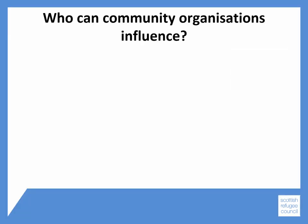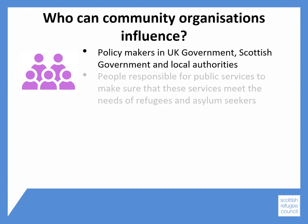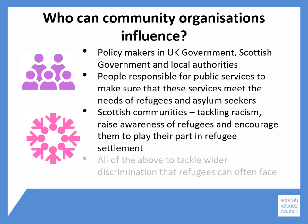There are lots of options in terms of who community organisations can influence, and this will very much depend on the issue or the change that you want to see and who has the power to make that change. It could be policy makers or decision makers in the UK Government, Scottish Government or local authorities. It could be people responsible for running public services, such as schools or health services, to make sure these services are meeting the needs of refugees and asylum seekers. Or it could be Scottish communities, particularly around tackling racism, raising awareness of refugees and encouraging them to play their part in welcoming people — or a combination, particularly if you're trying to change the wider discrimination that refugees can often face.